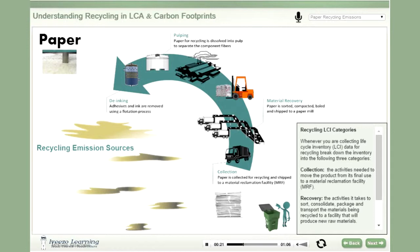The paper mill repulps the paper and then cleans the pulp to remove any contaminants. Once the pulp is clean, it may need to be de-inked using soap-like chemicals. And if the paper is colored, color-stripping chemicals are used to remove the dyes from the paper.